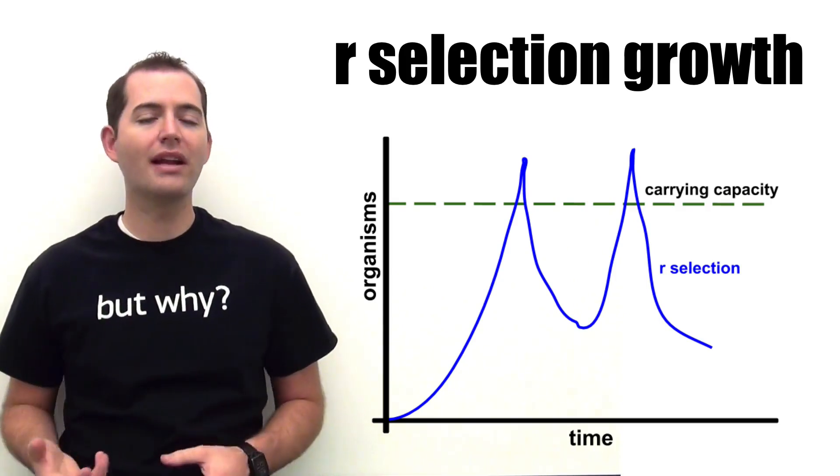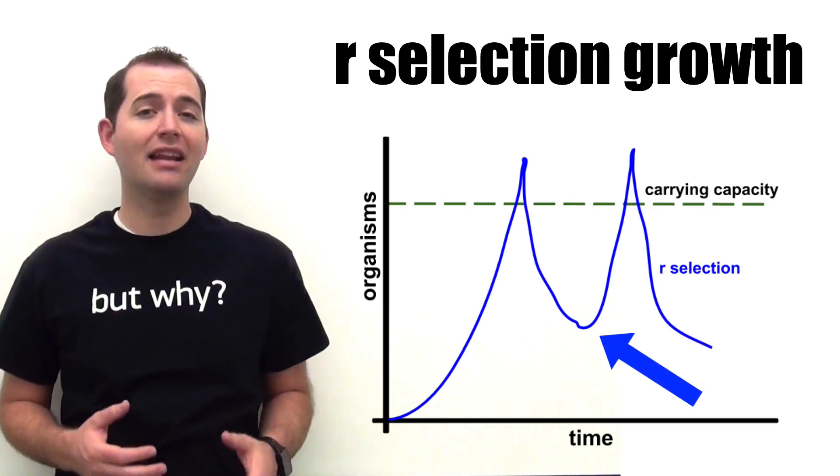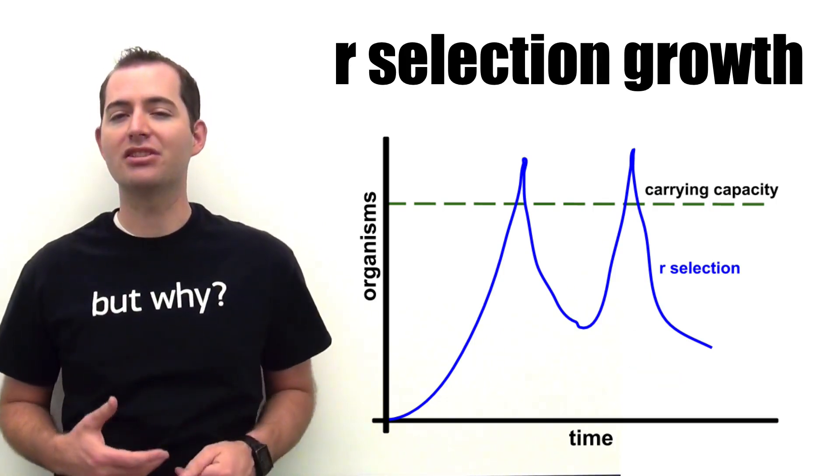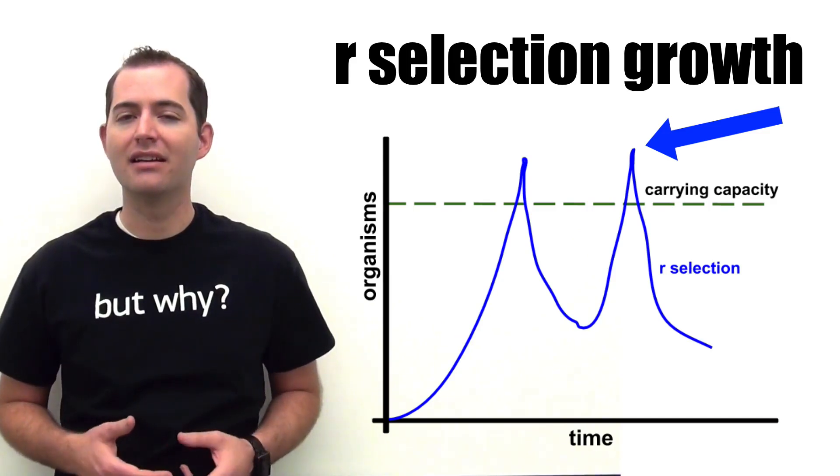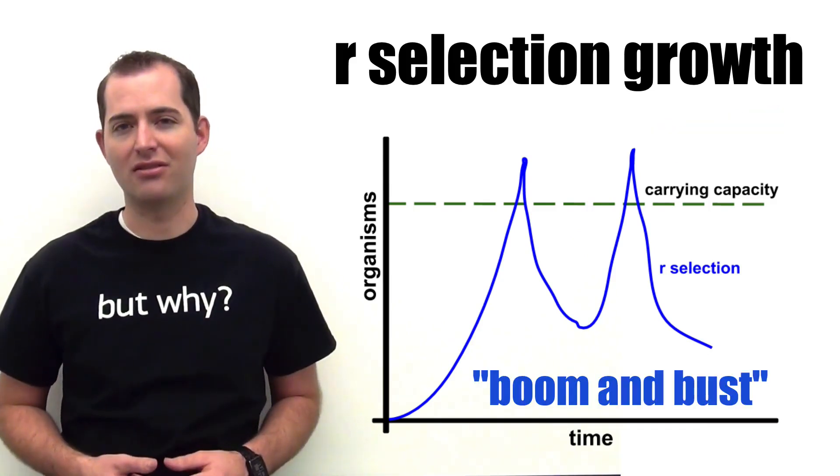The death of organisms in the population causes this population to collapse, and then as resources replenish, the population spikes and peaks again. This is known as a boom and bust population cycle.